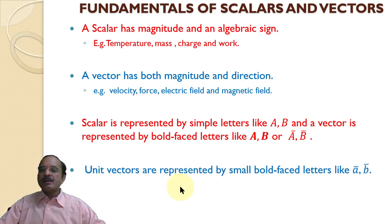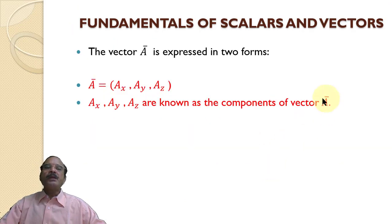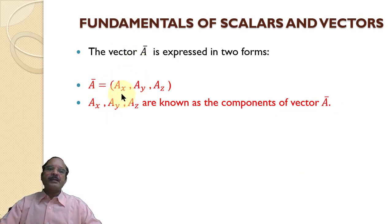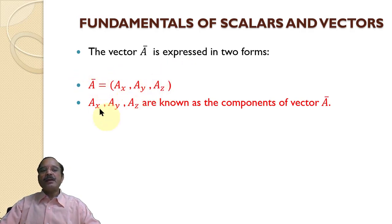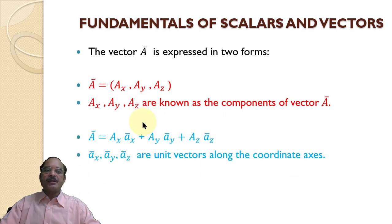Unit vectors are represented as â, â bar, small â bar and small b̄. One way of representing vector a is: vector a equal to (ax, ay, az), where ax, ay, az are the components of vector a in the three directions x, y, z.